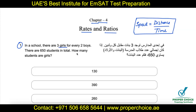Let's take the first example, which is related to ratios. In a school there are three girls for every two boys; there are 650 students in total — how many students are girls? The ratio of girls to boys is 3:2. This is a question of the type 'ratio as part to total.' There are two types of ratios: part to part — for example, girls to boys — and part to total, which is girls to total students.